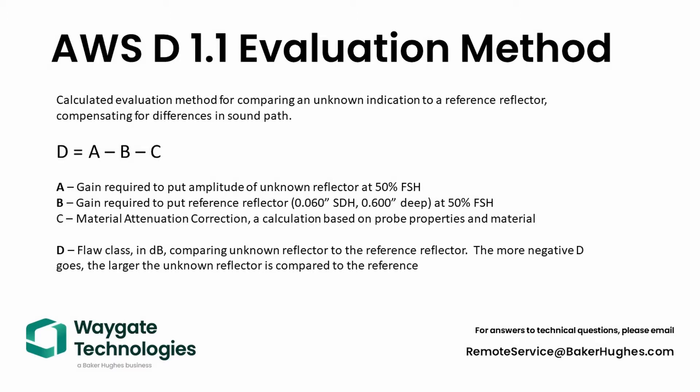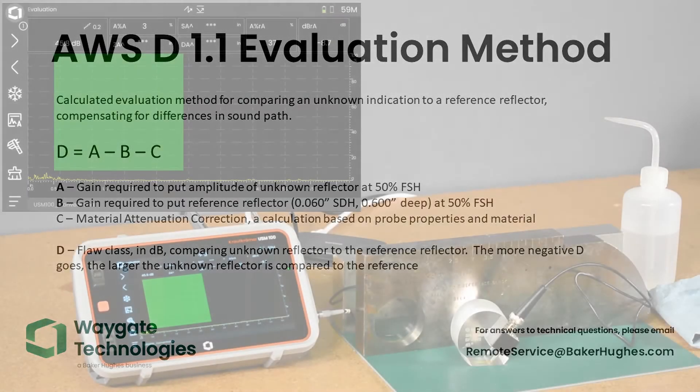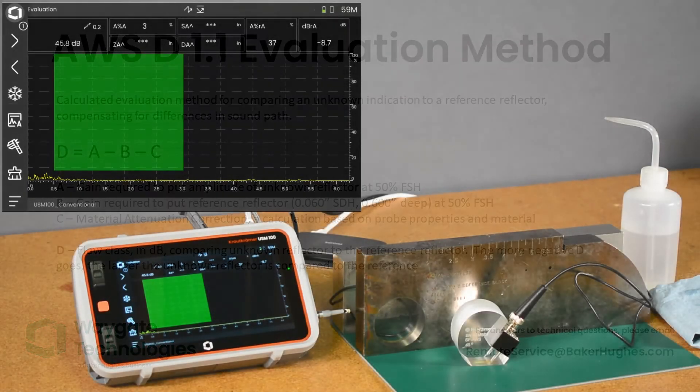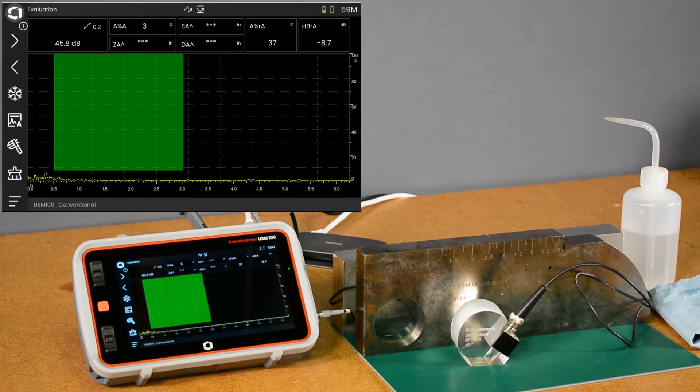You take those three parameters - the gain for the current echo under evaluation A, subtract the reference gain B from that, and subtract the material attenuation correction C. That gives you a result in decibels that represents the class of the flaw. We're going to walk through how to calibrate for this and look at a couple holes in a sample to show how the evaluation works.